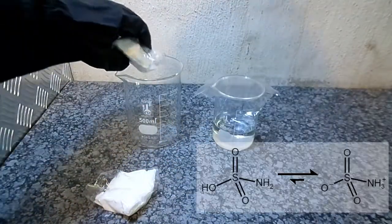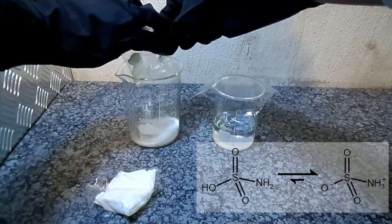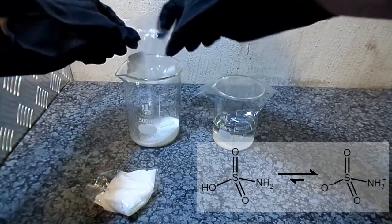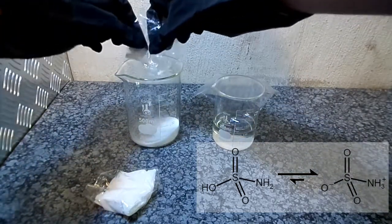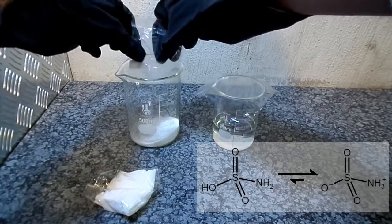Sulfamic acid exists as two tautomers, the neutral form as shown on the left and the zwitterionic form shown on the right. At room temperature the zwitterionic form predominates.